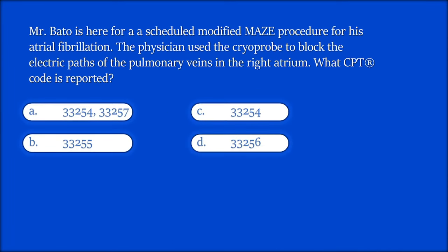That's a super difficult question. Let's now proceed to a milder question. Mr. Batou is here for a scheduled modified maze for his atrial fibrillation. The physician used the cryoprobe to block the electric paths of the pulmonary veins in the right atrium. What's the code you will report?